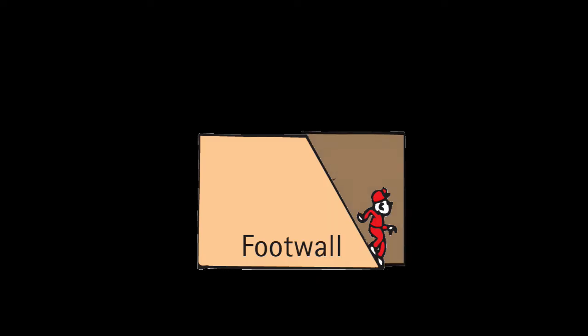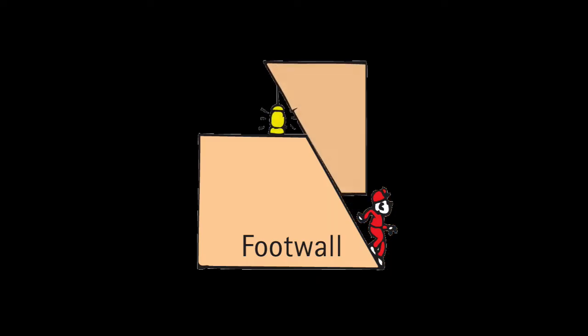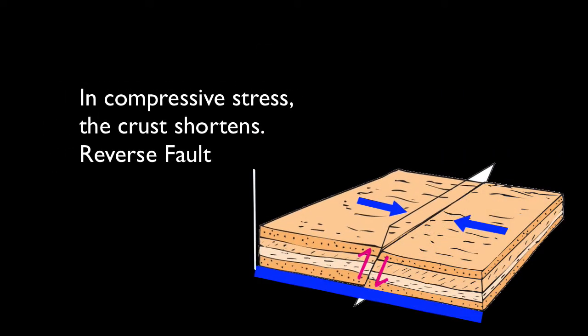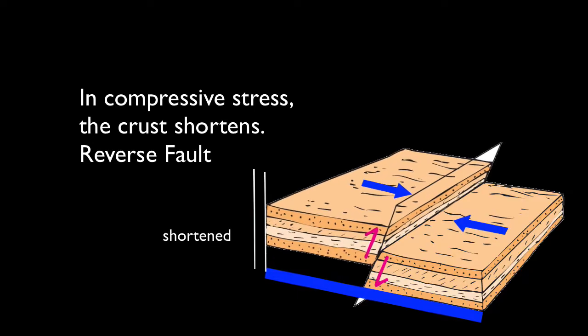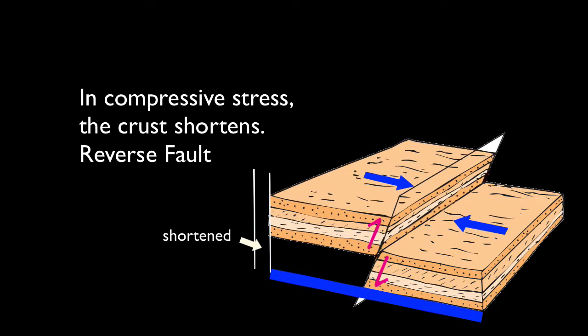If the hanging wall block moves up relative to the footwall block, the fault is called a reverse fault. Reverse faults occur in a geologic setting that has compressive stress, where the crust is being shortened. In such a setting, the rocks will usually fold first and then break.